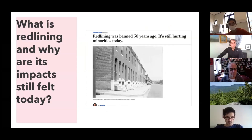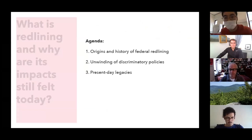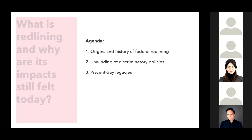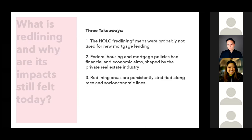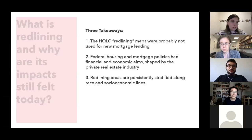What is redlining precisely? Do we really know its history? And why are its impacts still felt today? On the agenda is the origins and history of federal redlining, with a focus on U.S. policies. Second, I want to talk about some of the ways that the federal government has tried to unwind some of these discriminatory policies. And third, I want to talk about its present-day legacies.